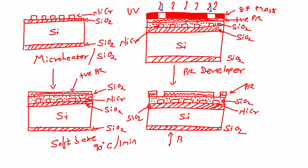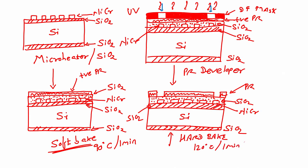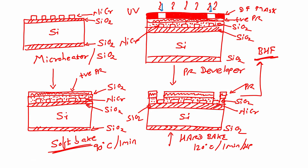Before dipping the wafer in buffer hydrofluoric acid (BHF), we have to do a hard bake at 120°C for 1 minute on a hot plate. After hard bake, we go for BHF etching. When we place the wafer in BHF, the silicon dioxide over the contact region gets etched, and now you can see the contacts.